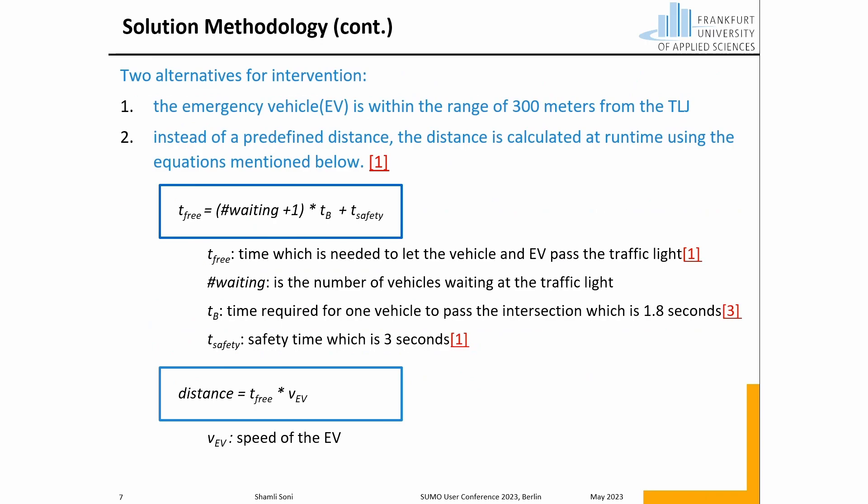For this, we had two alternatives. One: if the emergency vehicle and the traffic light junction are within a range of 300 meters, then the traffic light switches to green. And second: instead of defining a 300-meter distance, it is calculated using the number of vehicles waiting in front of the traffic light junctions. This can be shown in the equations highlighted, where T-free is the time needed to let vehicles pass the intersection, calculated using the number of vehicles waiting in front of the traffic light junction times the time required for one vehicle to pass the intersection plus safety time. T-free is then used to calculate the optimal distance.